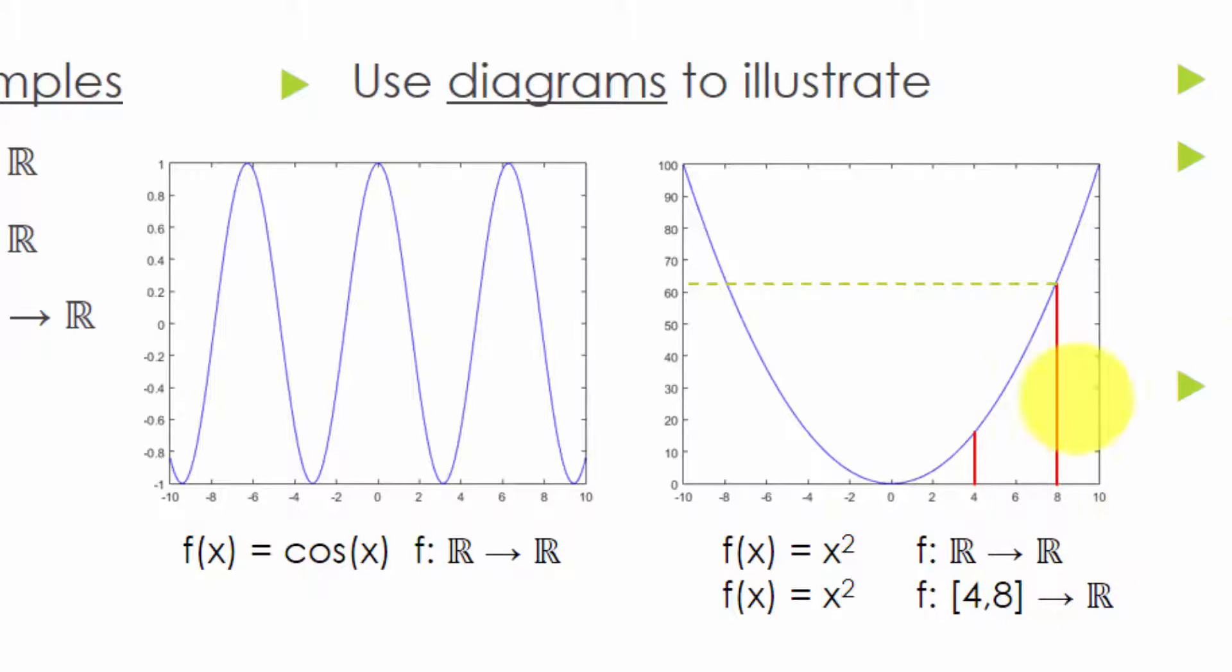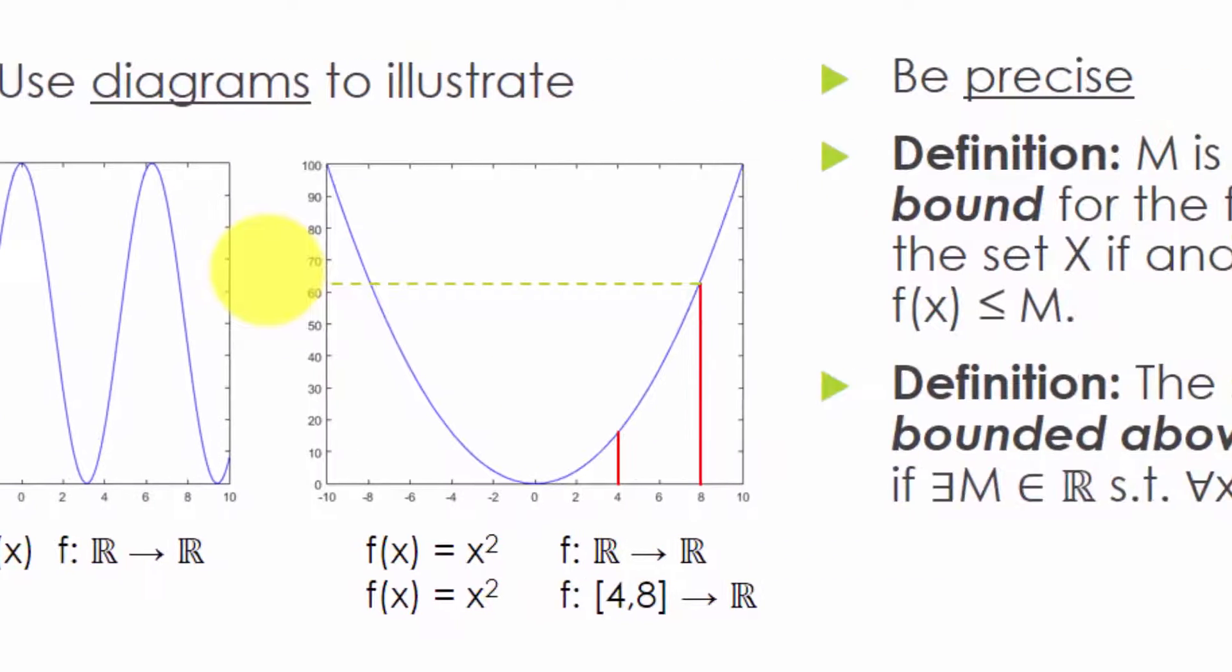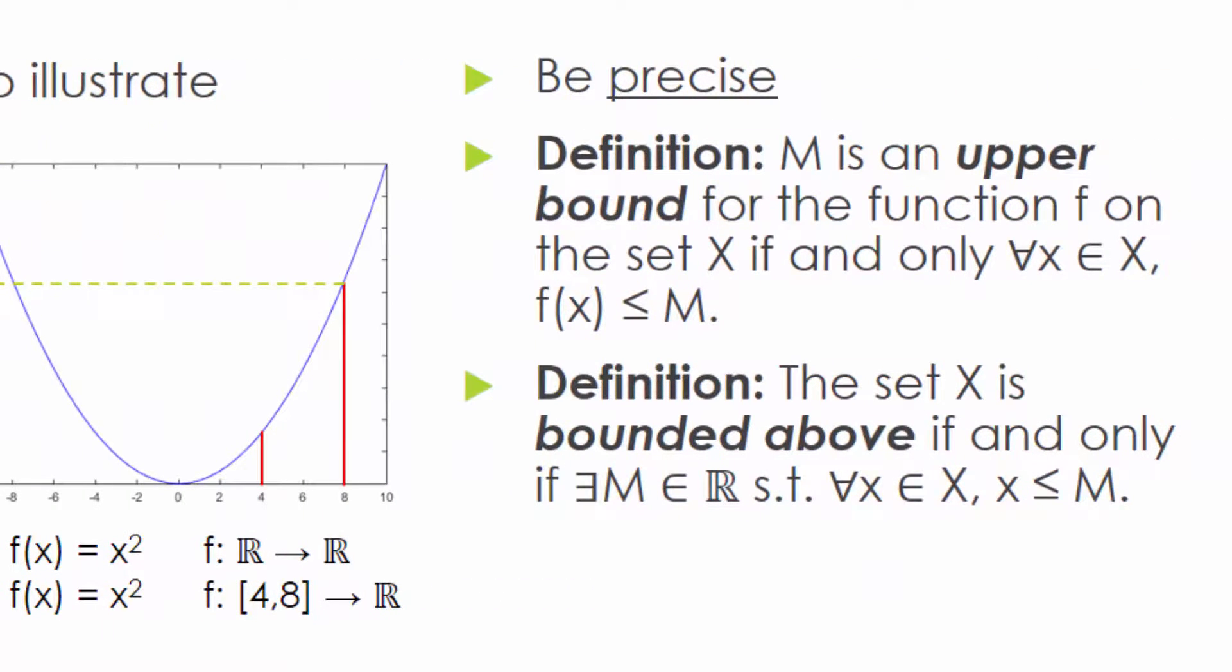But what if we change its domain from the reals to only the interval from 4 to 8? Is it now bounded above? Yes, it is. 64 is its upper bound. So are 64 and a half, 69, 901, and infinitely more other numbers. Then what is the third technique for deep understanding of a definition?